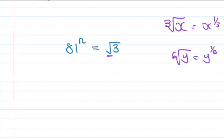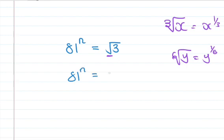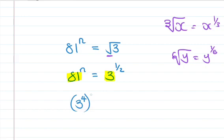We want to write it as 81 to the power n is equal to 3 to the power half. We need to express 81 in terms of base 3. 81 is 3 times 3 times 3 times 3, so 81 is 3 to the power 4. So we have 3 to the power 4, close bracket, to the power n, is equal to 3 to the power half.